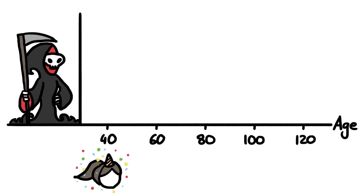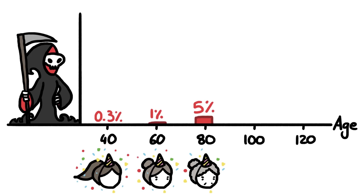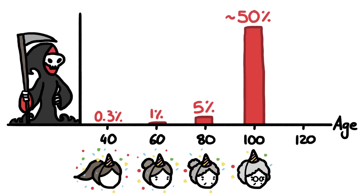Today, a 40-year-old has a 0.3% chance of dying in the next year, while a 60-year-old has a 1% chance of dying in the next year, an 80-year-old has a 5% chance, and a 100-year-old has a 50% chance. But around that age, there's some evidence that the odds of dying level off.